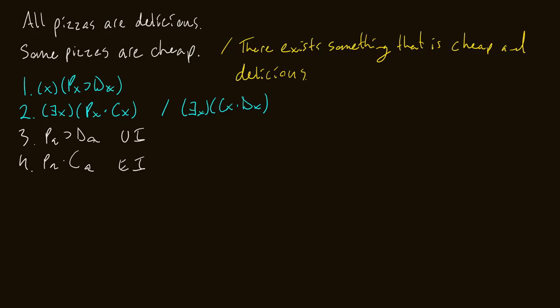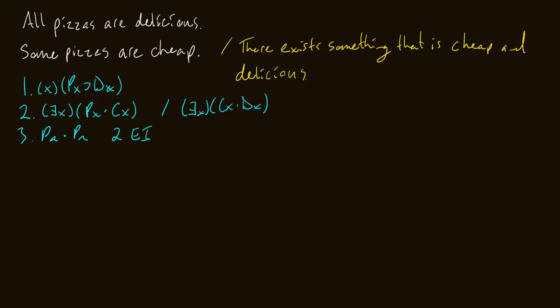What we have to do is existentially instantiate before we universally instantiate. I'm going to existentially instantiate first — I'll do that for line two and instantiate to the constant A. I say: A is a pizza, and A is cheap. I just brought it into existence. I know there's something that exists that's a pizza and cheap, we'll just call it A. That comes from line two, existential instantiation.